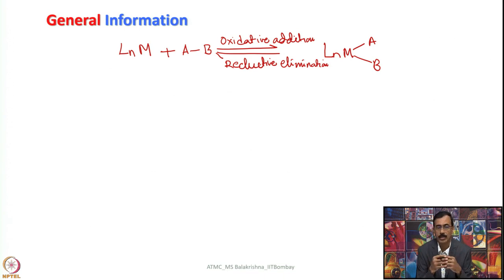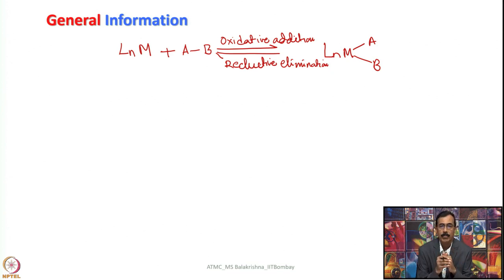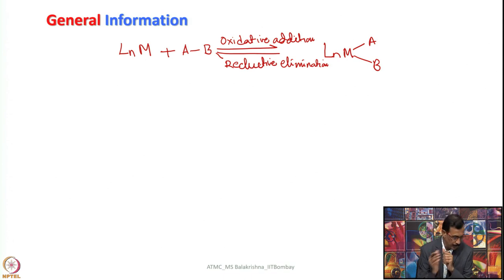Before we go for that, let us try to recall our understanding of main group chemistry and whether we have come across any similar reactions when we studied main group chemistry. Let me try one reaction that you are all familiar with: for example, you take methyl bromide and treat with magnesium, what you get is methyl magnesium bromide.